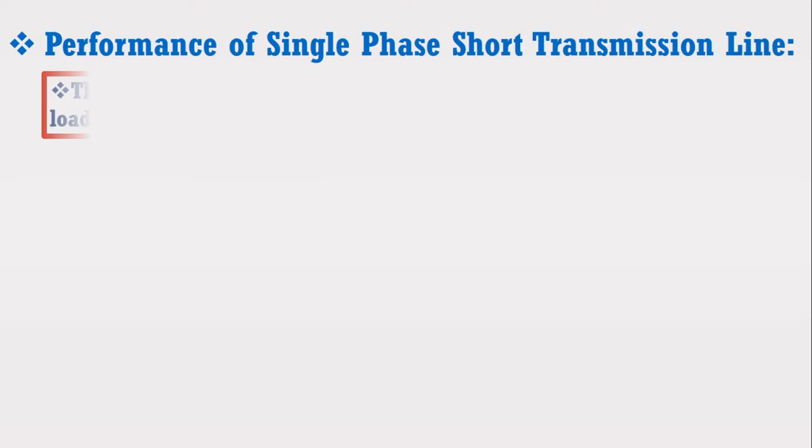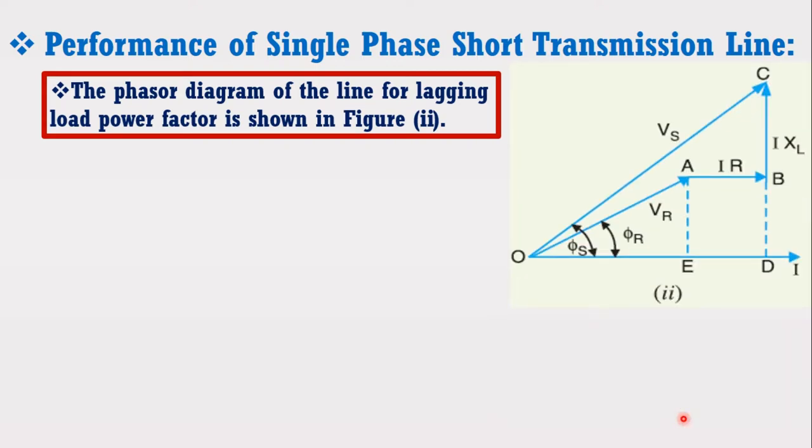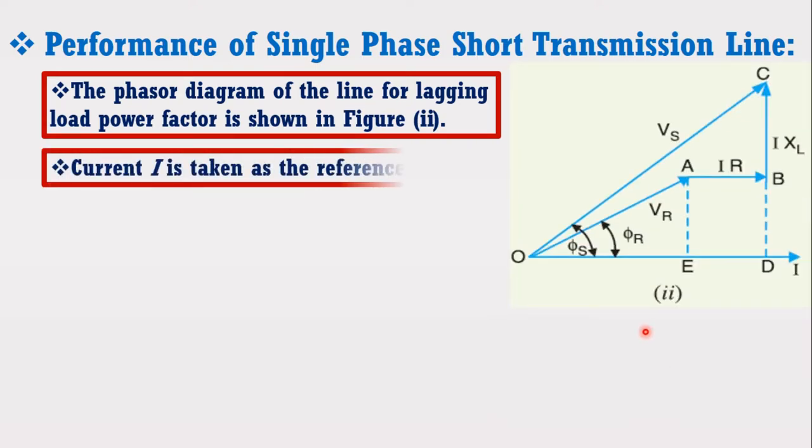Now, the phasor diagram of the line for lagging load power factor is shown in figure 2. From the figure, it may be noted that current I is taken as the reference phasor.